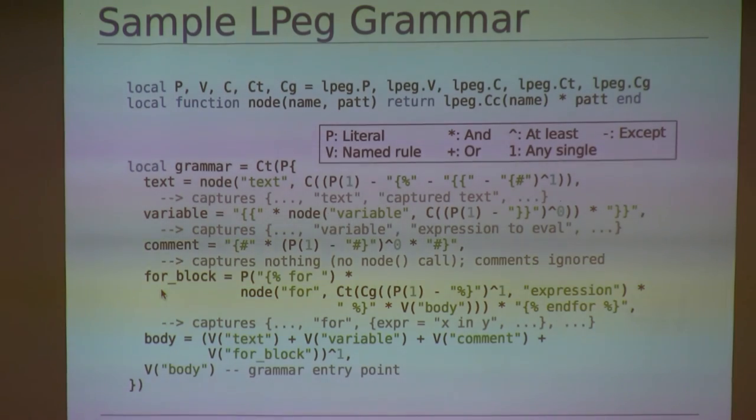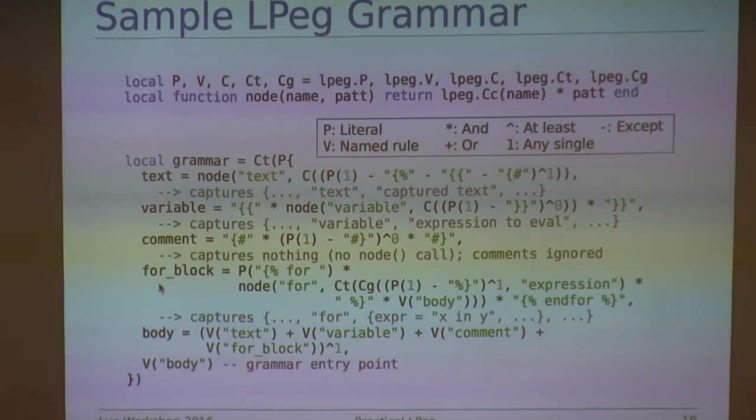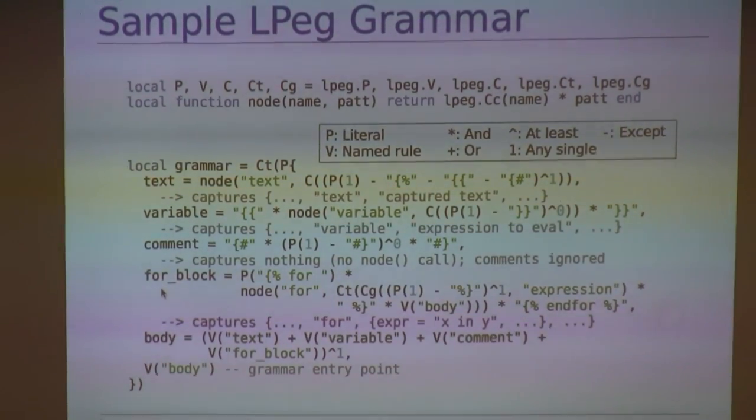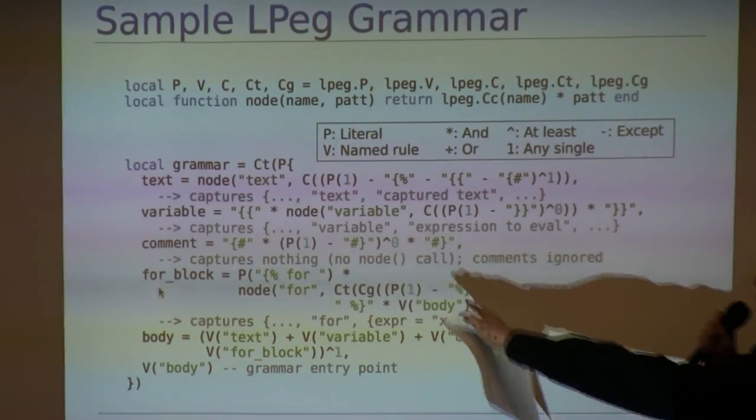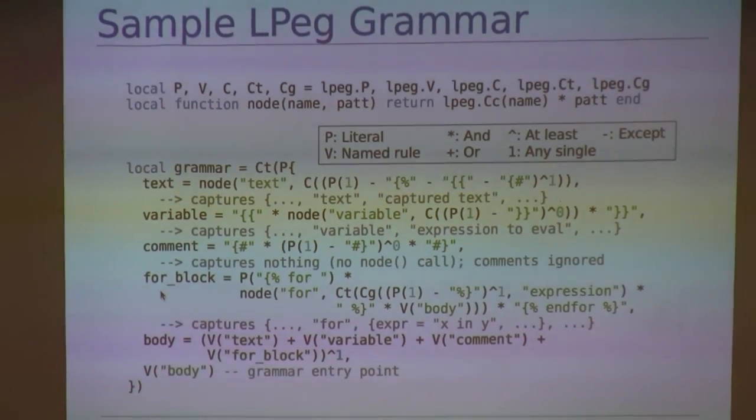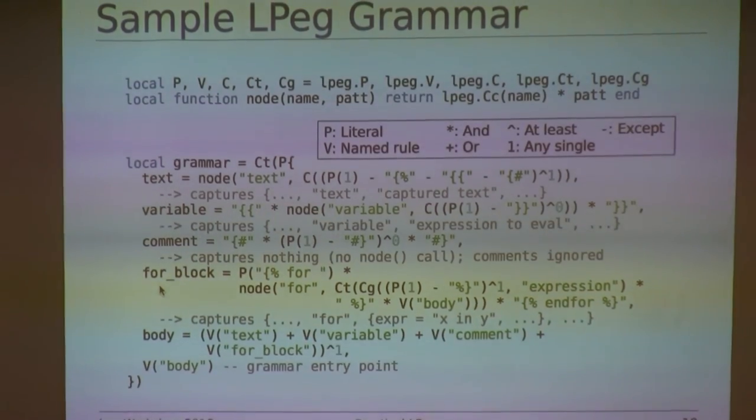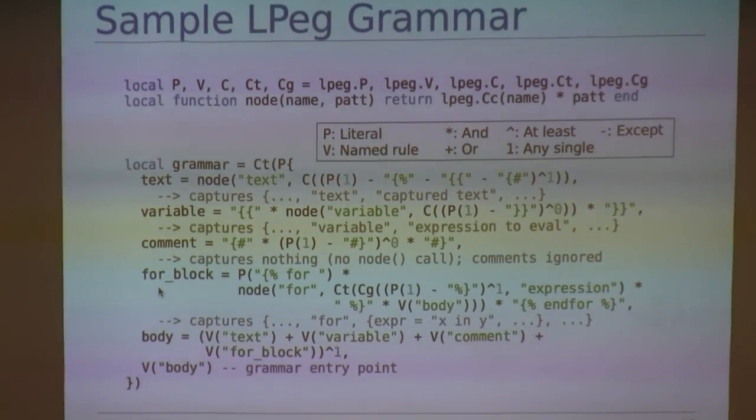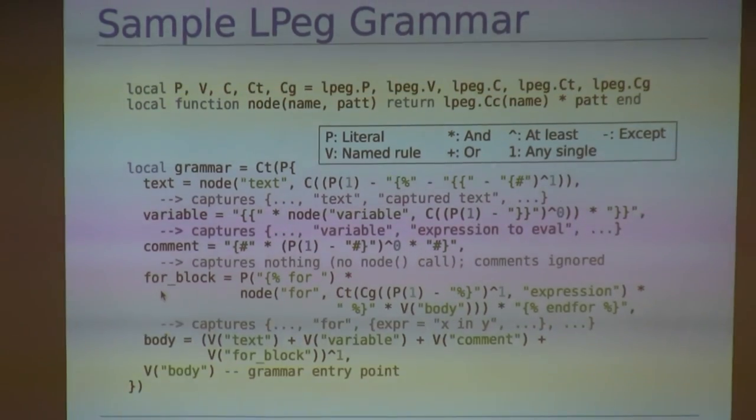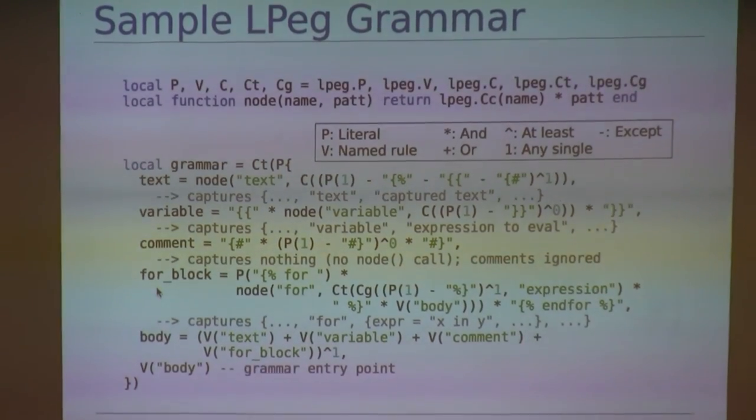Then we're going to construct an LPEG grammar. And this grammar is composed of rules for plain text, variable placeholders, comments, a for-control structure, and any combination thereof. Now, the plain text rule is going to match any character that is not a special delimiter for as many characters as possible. Please ignore the LPEG.C style captures if you want. This only describes how to capture text in the AST. It has no bearing on the match itself, so it's just there if you are curious, but you don't have to worry too much about it.